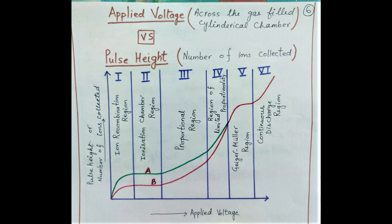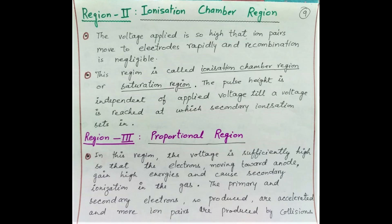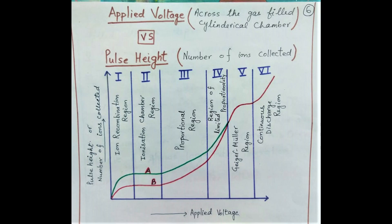Region 2 is called the ionization chamber region or saturation region. Now the voltage applied is so high that recombination is almost negligible, and the electrons and positive ions rapidly move towards their respective electrodes. The pulse height becomes independent of the applied voltage in this saturation region, until a voltage is reached at which secondary ionization sets in.